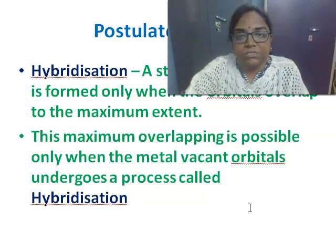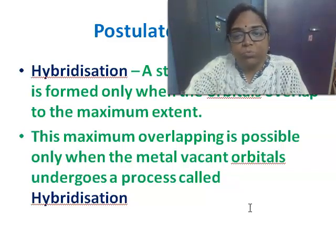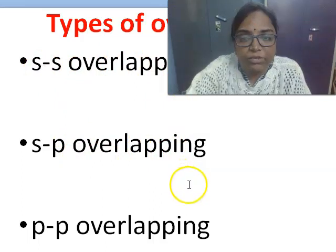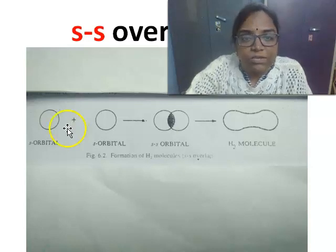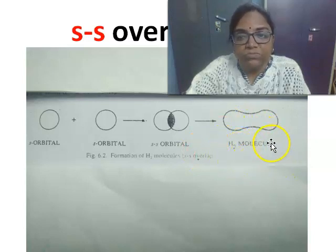Next comes the concept of hybridization. A very strong overlap bond is formed only when the orbitals overlap to the maximum extent. This maximum overlapping is possible only when the vacant metal orbitals undergo a process called hybridization. There are different types of overlapping: SS overlapping, SP overlapping, and PP overlapping. In SS overlapping, one S orbital overlapping with another S orbital gives SS overlap — a familiar example is how the hydrogen molecule is formed from two S orbitals.